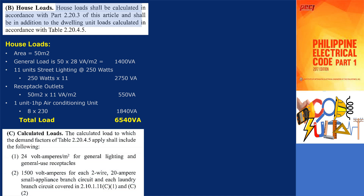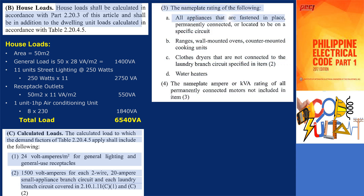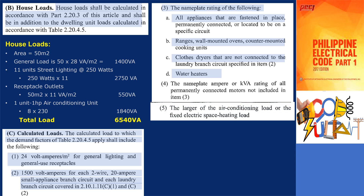As specified in subsection 2.20.4.5c, the connected load of all dwelling units is to be added together and the demand factor from table 2.20.4.5 is applied. The general lighting load, including general use receptacle outlets, is calculated at 24 volt amperes per square meter. For 20-ampere-rated small appliance branch circuits and laundry circuits, each shall be at 1,500 volt amperes. The nameplate rating of all fixed appliances — such as fastened-in-place appliances, cooker equipment, clothes dryers not connected to laundry circuits, and water heaters — should be considered. In cases where both air conditioning and fixed heating equipment are present, the larger load between the two should be used for calculation purposes.